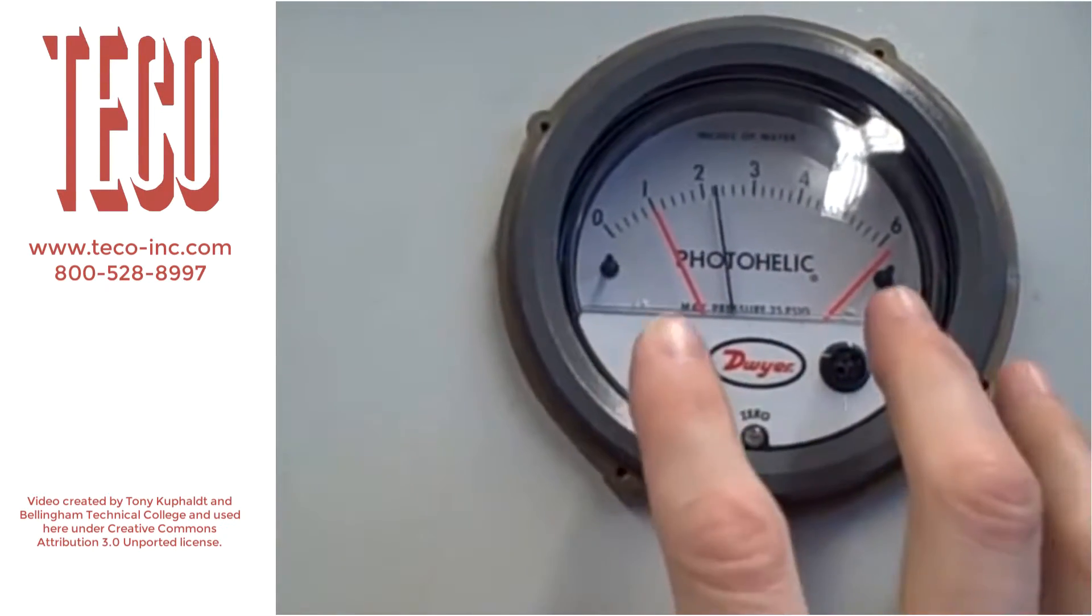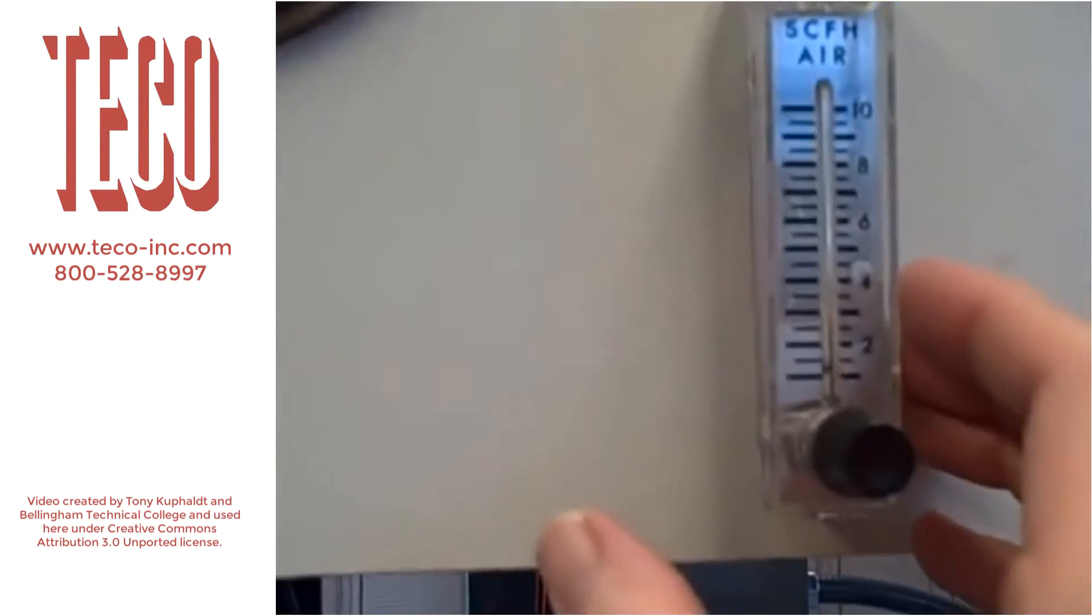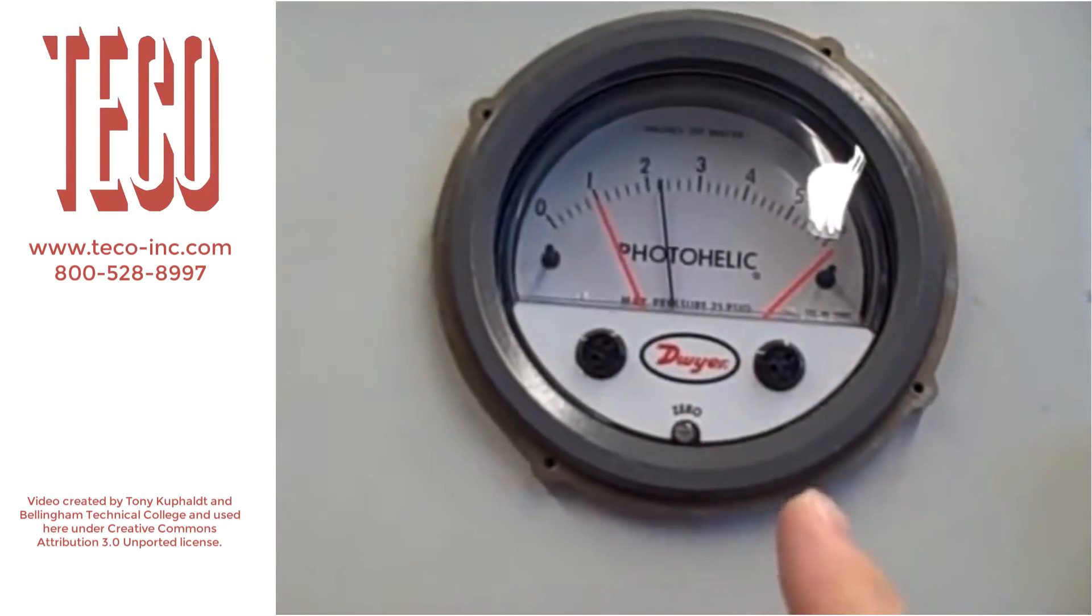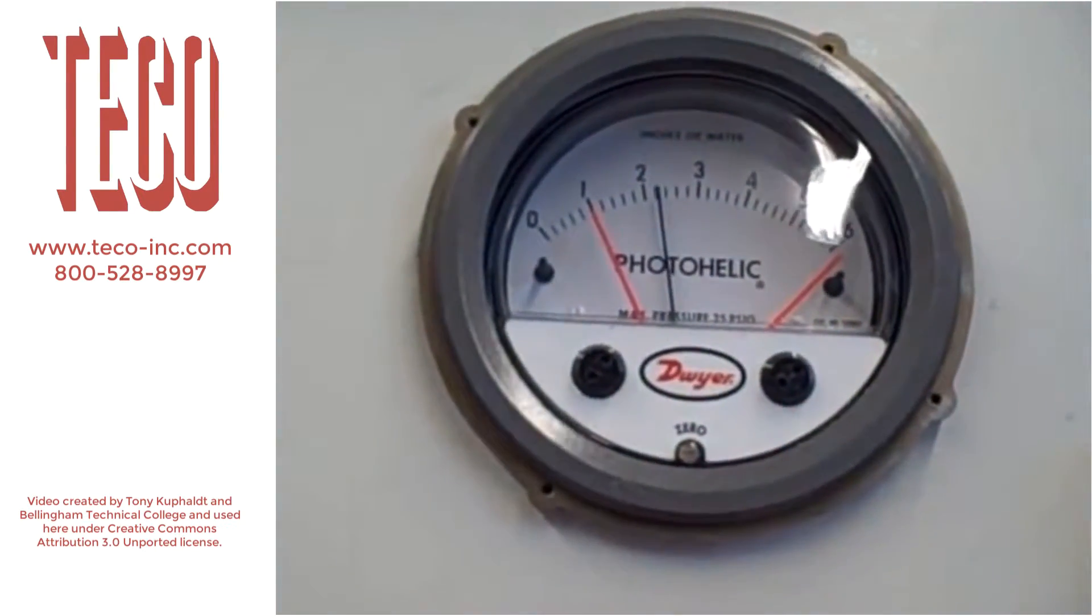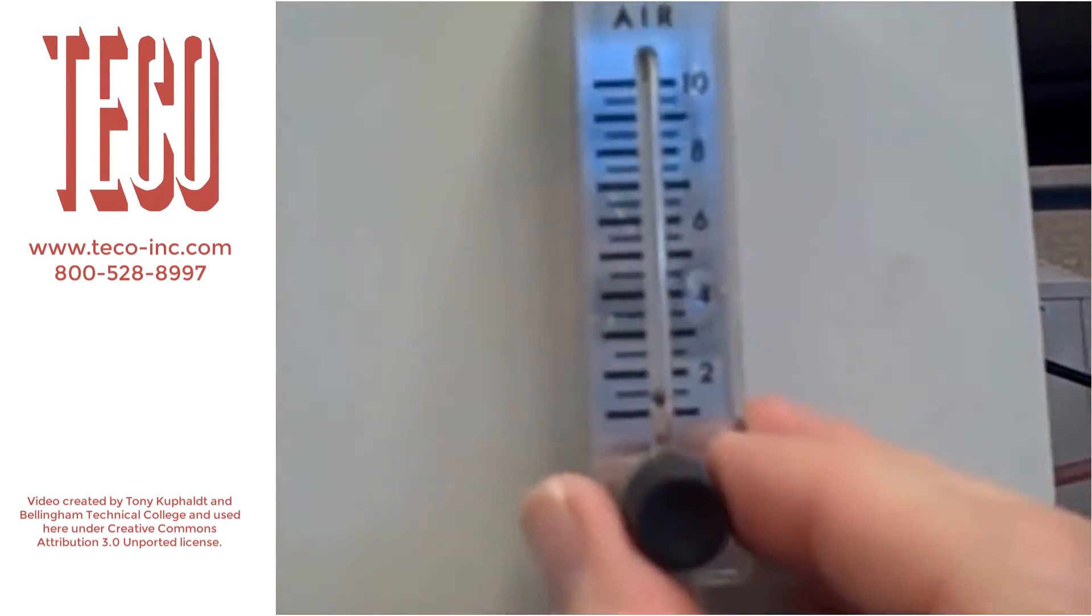But part of this system, essential part of any bubble tube system, is some sort of flow indicator to let you know when you do have a purge gas flowing into the bubble tube. So here, the rotometer serves that purpose.